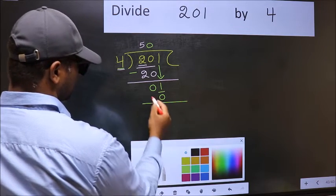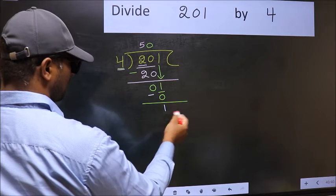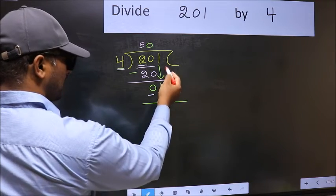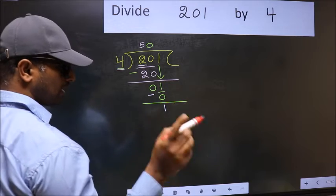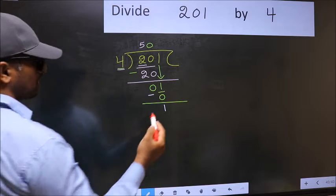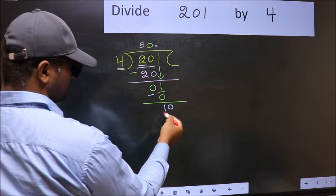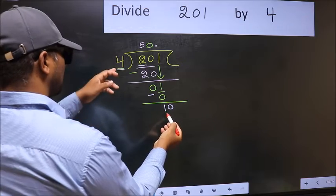Now you should subtract 1 minus 0, 1. Over here we did not bring any number down and 1 is smaller than 4. So now you can put a dot and take zero. So 10. A number close to 10 in 4 table, the decimal is 4 twos 8.